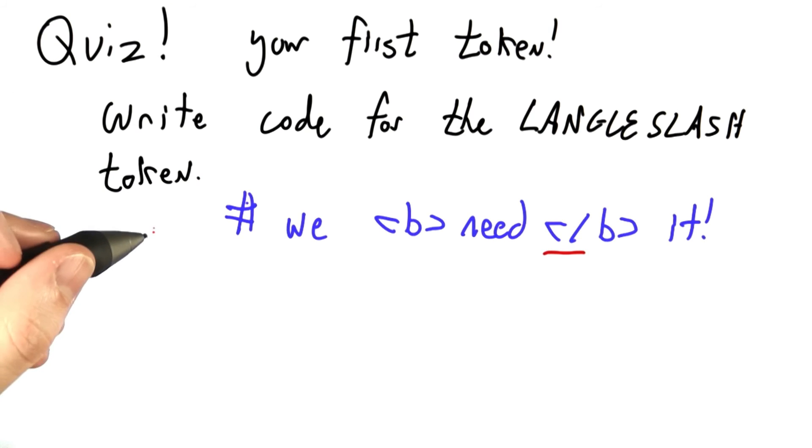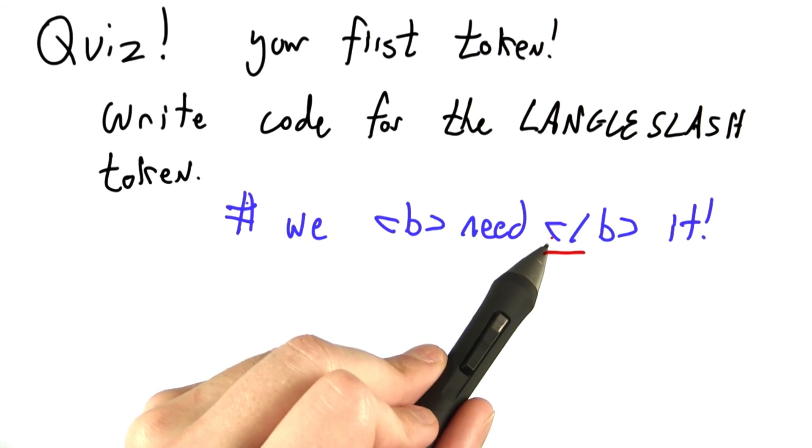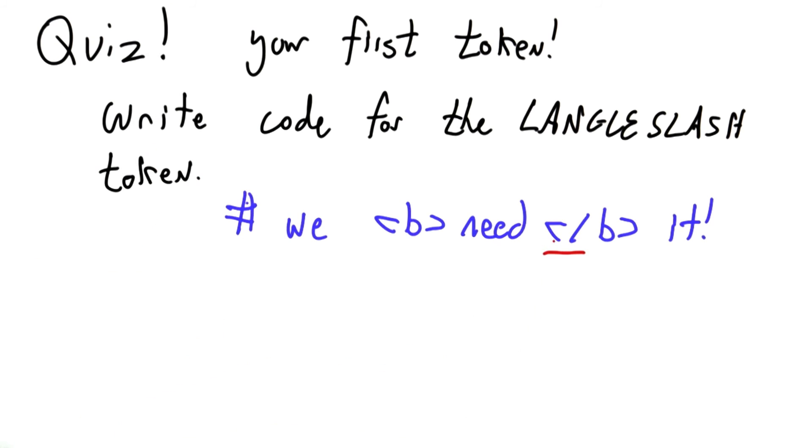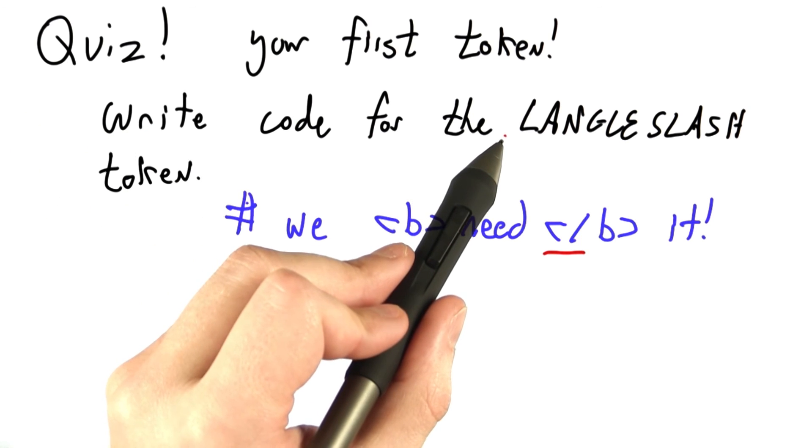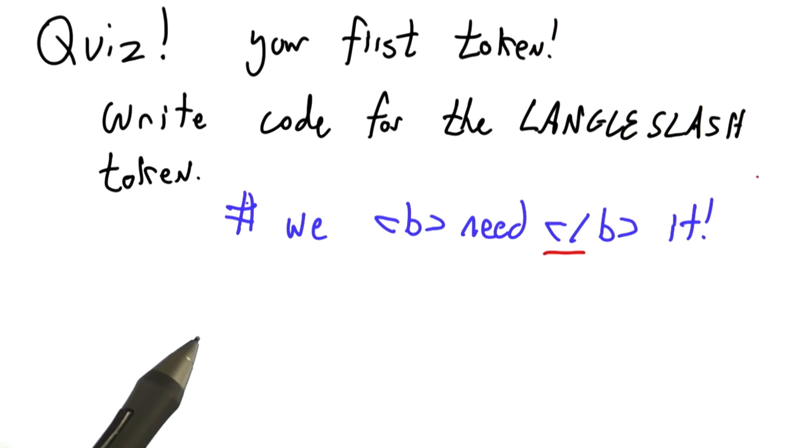The langle slash token is surprisingly important. We really need it to know when all of our tags end. Use the interpreter to define a procedure, t underscore langle slash, that matches it.